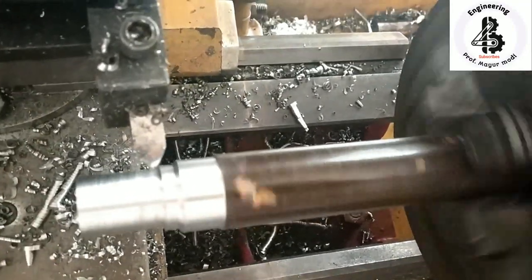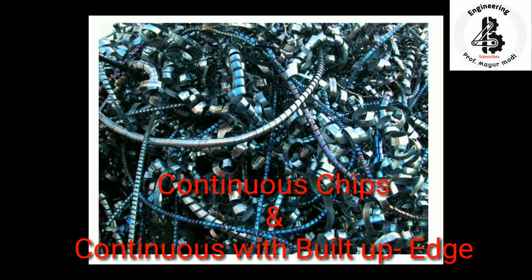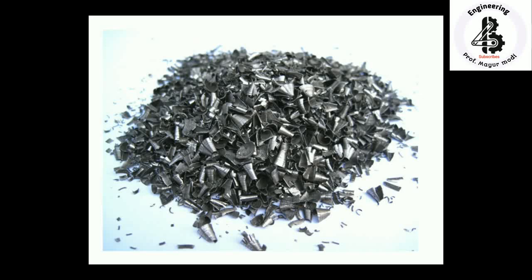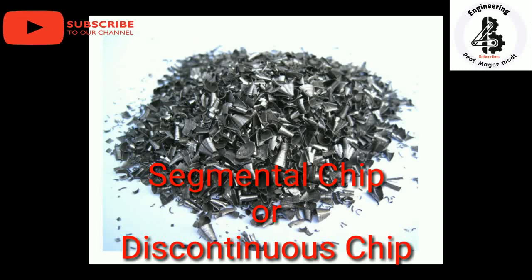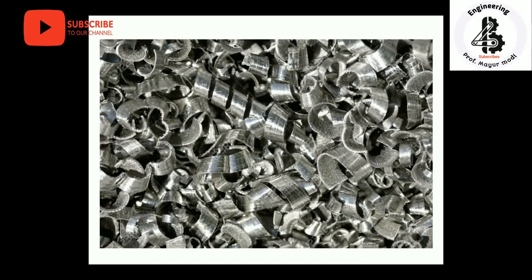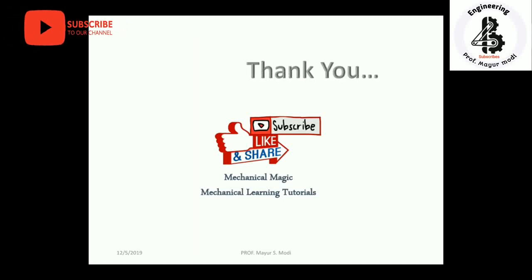These are all the different kinds of chips. Continuous chips are formed with more ductile materials, and sometimes continuous with built-up edge chips are formed. Now we can see the segmental or discontinuous types of chips — they do not have enough length and break down because of the characteristics of the brittle material. If you like the video, please subscribe and share Mechanical Magic, Mechanical Learning Tutorials. Thank you very much.